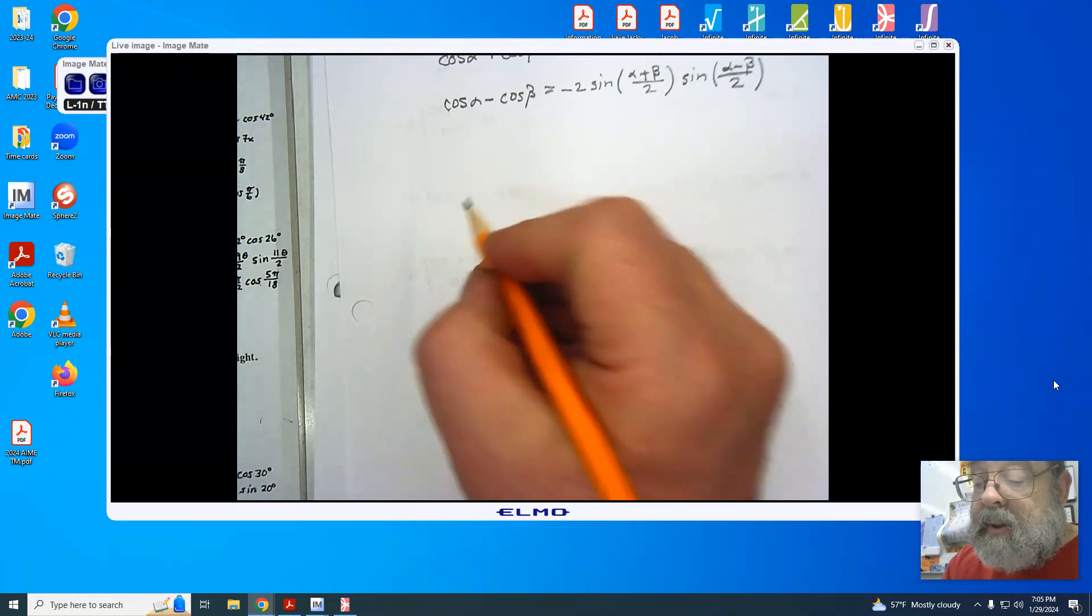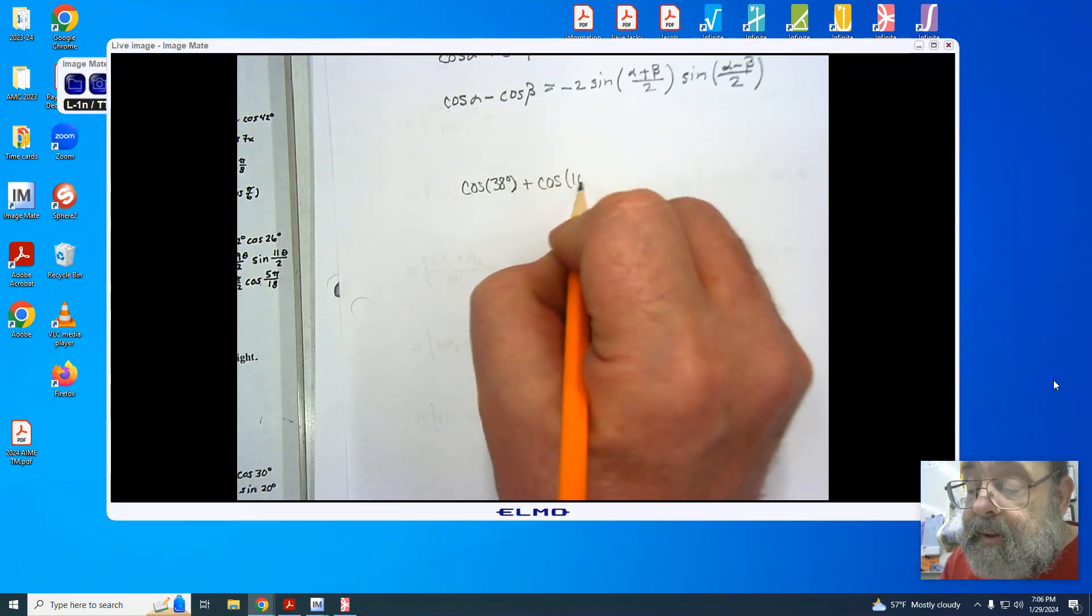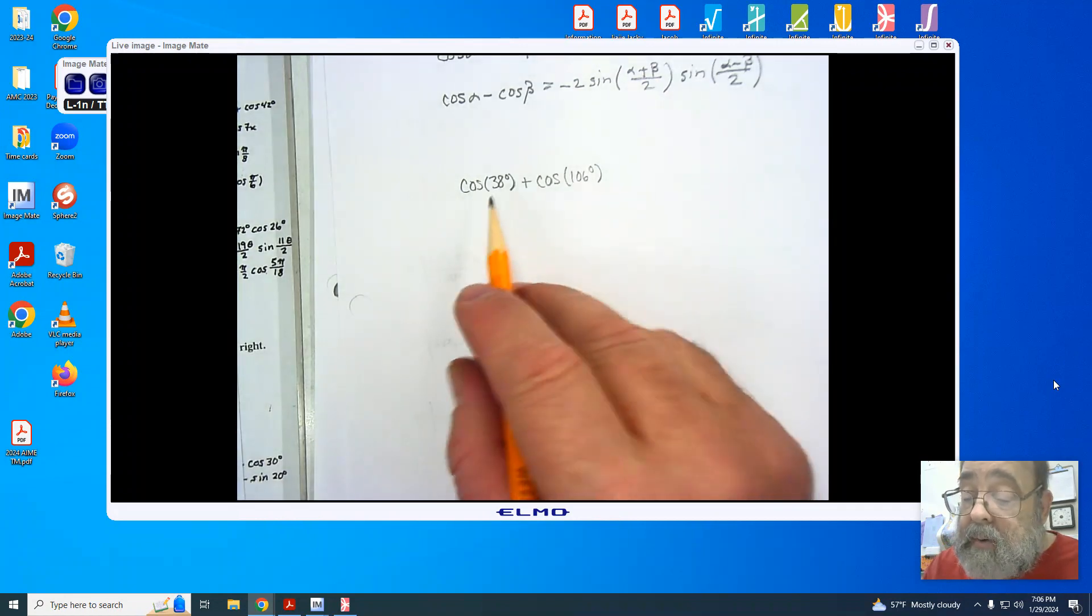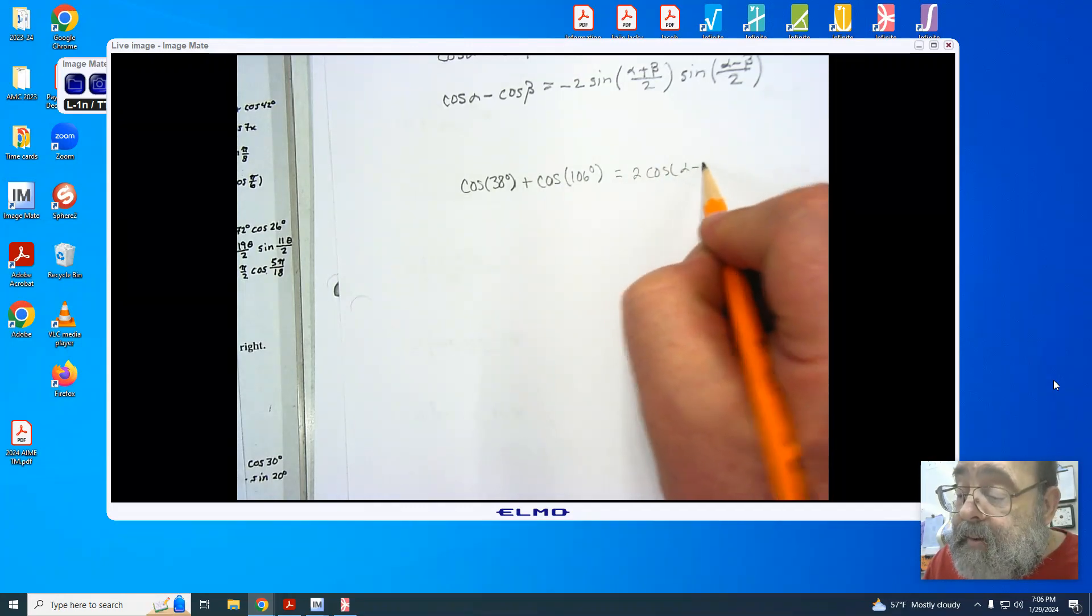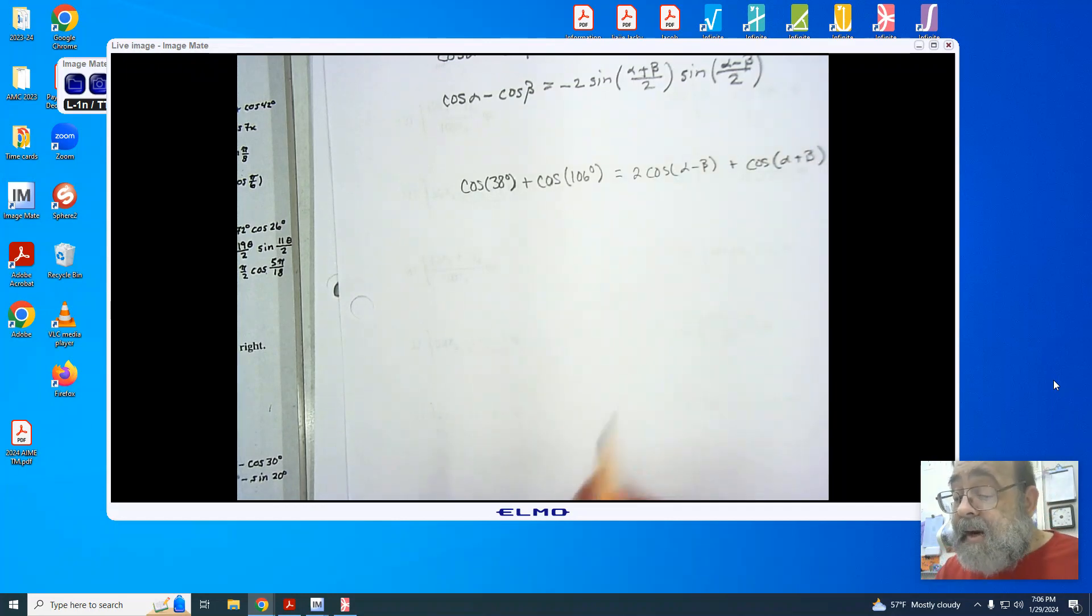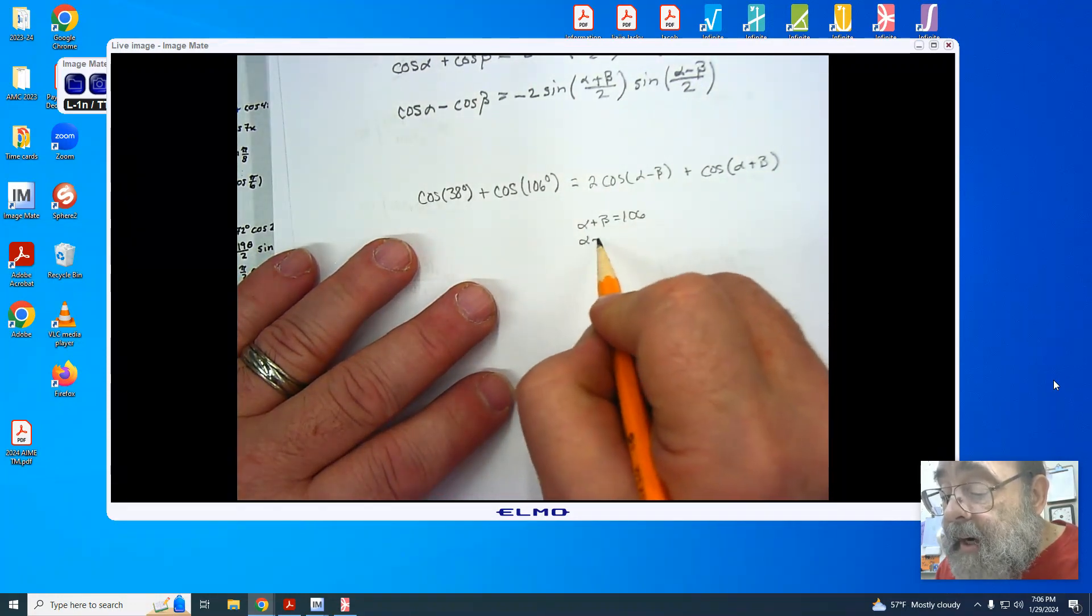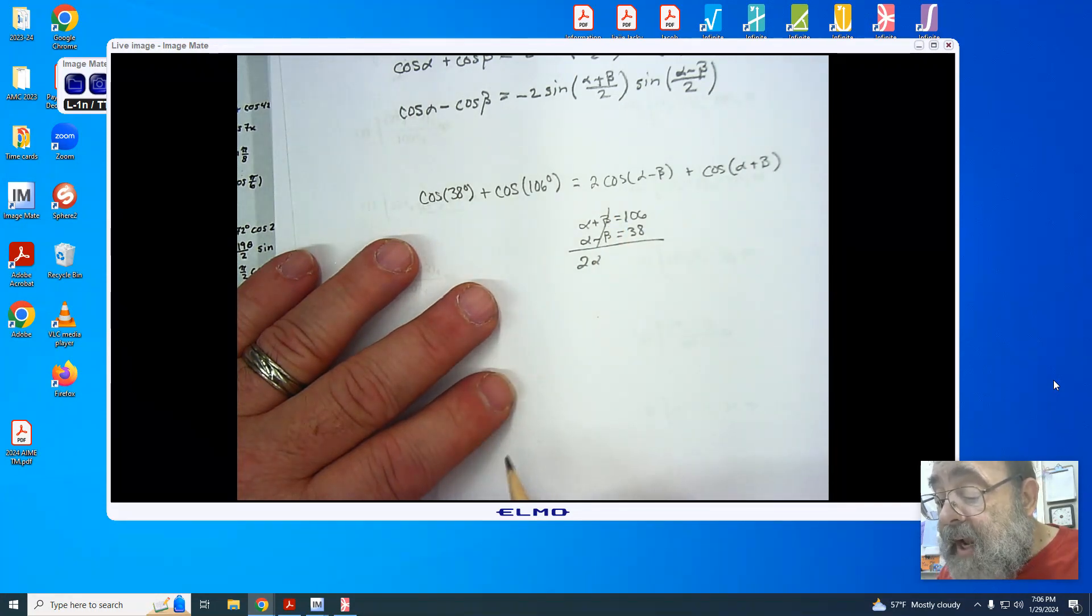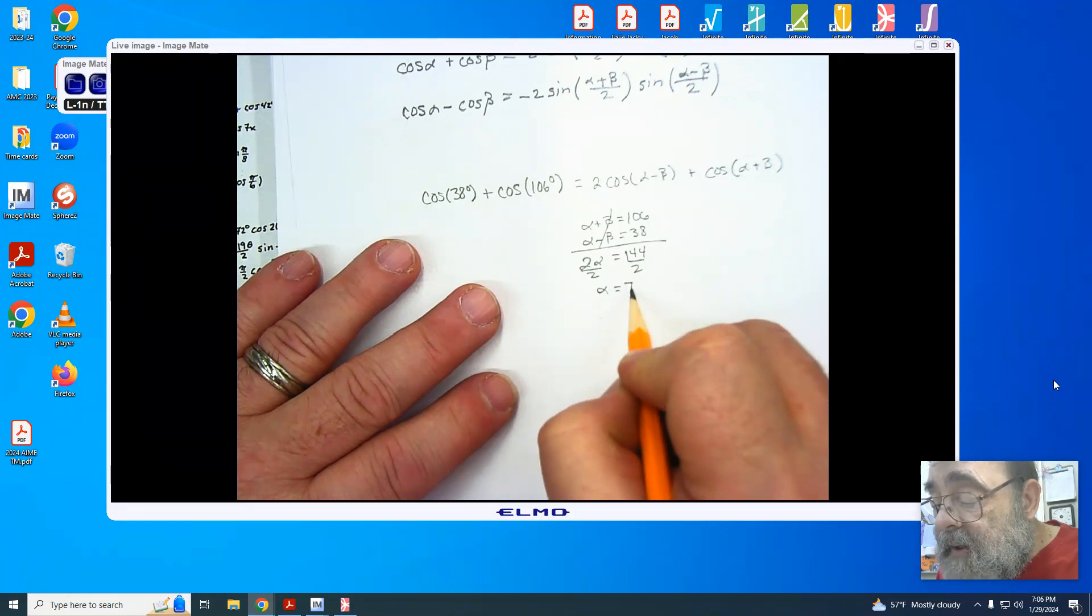So let's take cosine of 38 degrees and we're going to add the cosine of 106 degrees. Now for me I would look at this and I would say that the formula that I am working with with a cosine cosine is going to be giving me a 2 cosine of alpha minus beta plus the cosine of alpha plus beta. Now once I have that I know that alpha plus beta is 106 and I know that alpha minus beta is going to be 38. I end up adding using linear combination, the two betas cancel and I have two alpha and I'm left with 144. Dividing both sides by two I find that my alpha is 72 degrees.